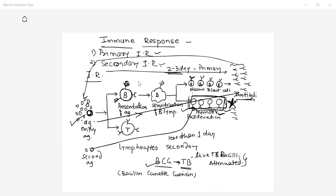In the first immune response, the antibody titer is very low. Titer means the amount of active antibody in the serum. During the second stimulus — the secondary immune response — the memory cells produce a very large amount of antibody. The antibody titer is very high in the secondary immune response compared to the primary immune response.